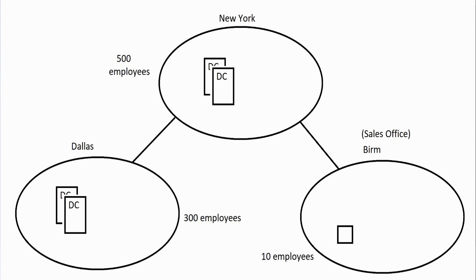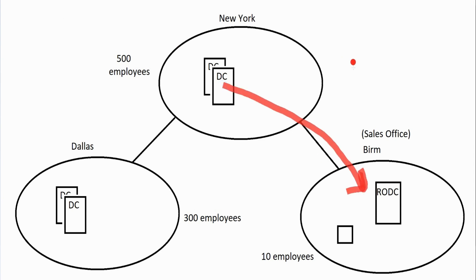An RODC would be a good fit for this environment. Instead of a full-blown DC, we put an RODC server in Birmingham. RODC servers are read-only, so replication only occurs inbound to the RODC. Another great thing about RODC is that you can have it cache the passwords of just the ten employees in that office — it does not have to know everybody's password.